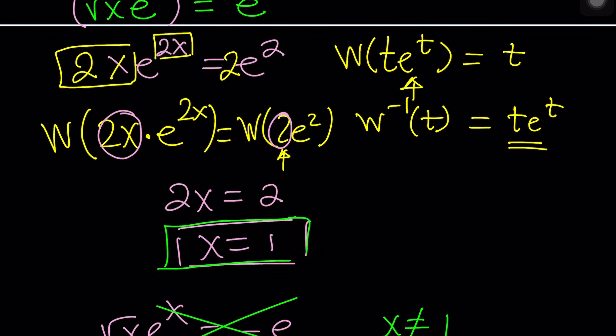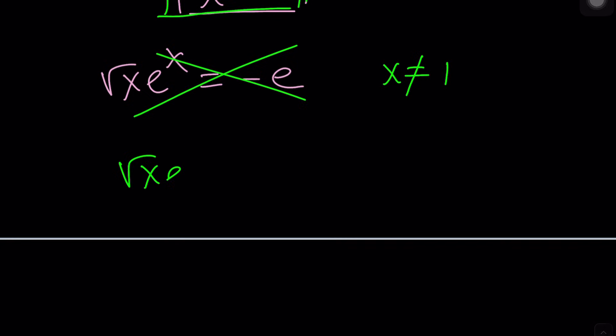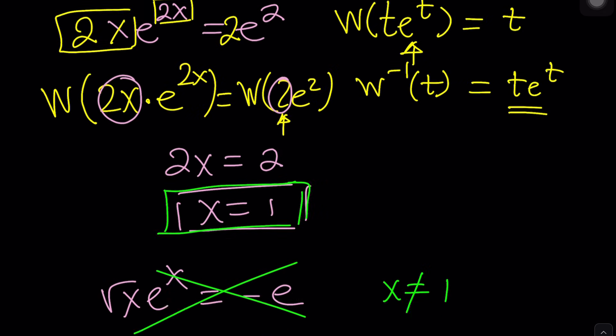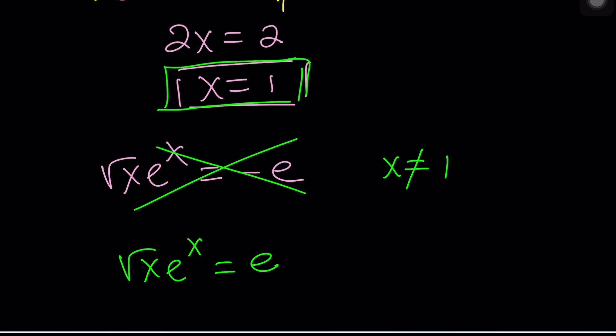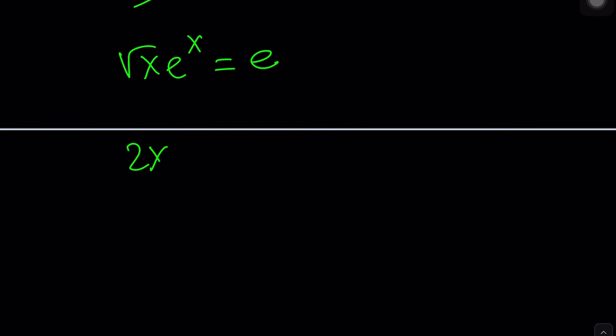But at least we know that x equals 1 works. Now, you didn't really have to do it the Lambert's W function method because you could also just guess and check like I said earlier. Okay, square root of x e to the x equals e. So from here, it's clear that x equals 1 because 1 times e equals e, right? Or after you put it in this form, it's actually more clear when we wrote it as 2x e to the 2x equals 2e squared. It's probably clear that 2x corresponds to 2 here because 2x is 2 here. You get it? If 2x equals 2, then we have a one-to-one correspondence.